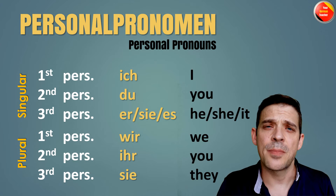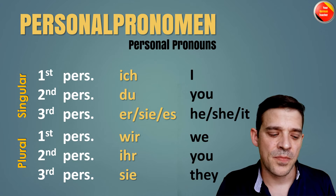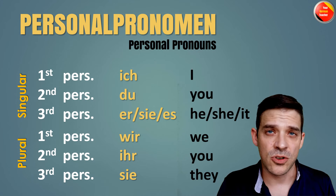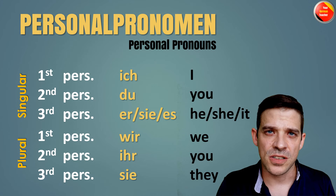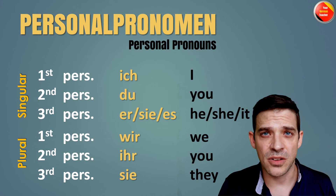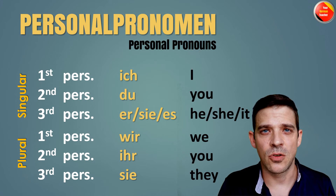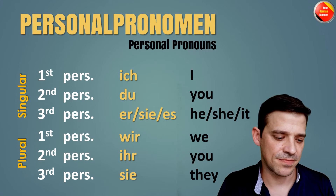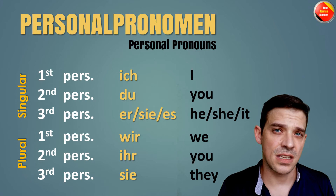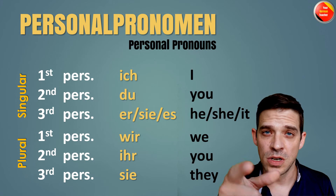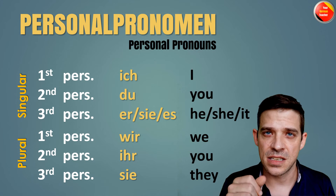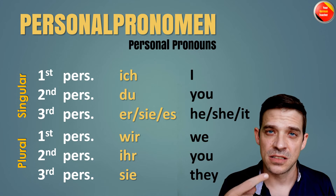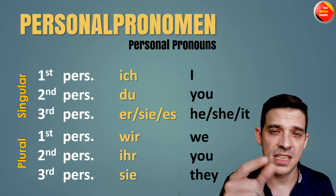There is also another Sie, capitalized. This is the formal version of 'you', but I will link up another video for this as a card, and you can check it out if you want more details about the formal and informal way in German. All right, so again: Ich, Du, Er, Sie, Es, Wir, Ihr, Sie.